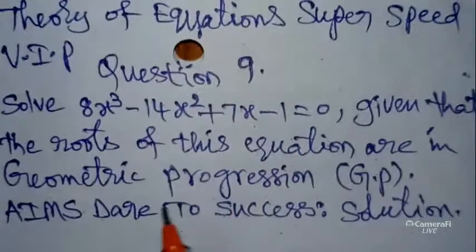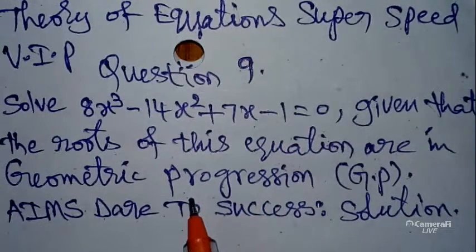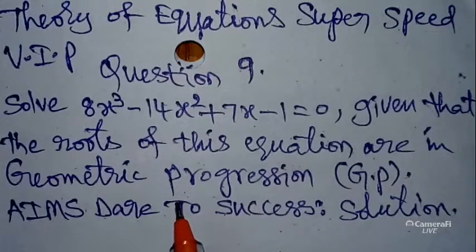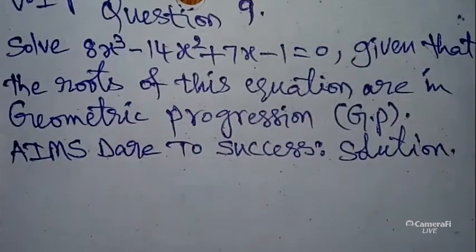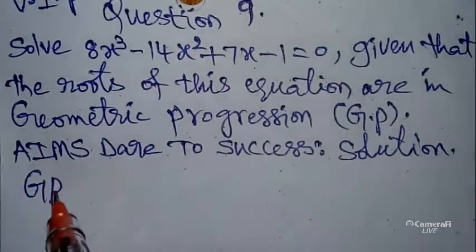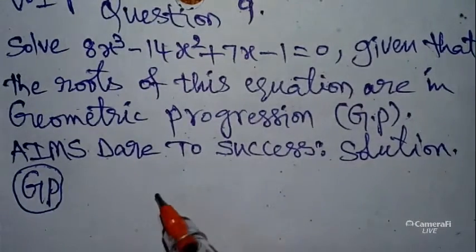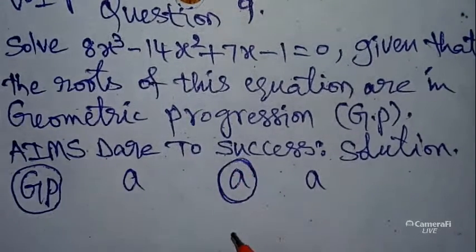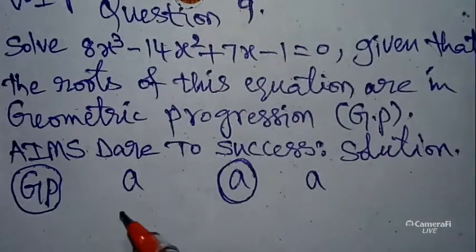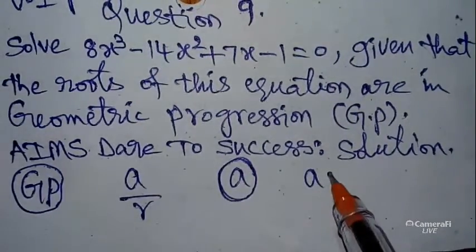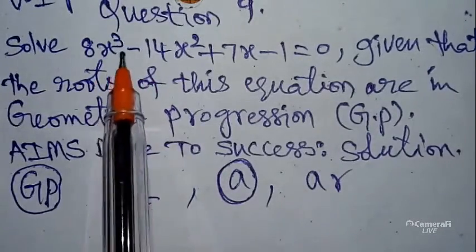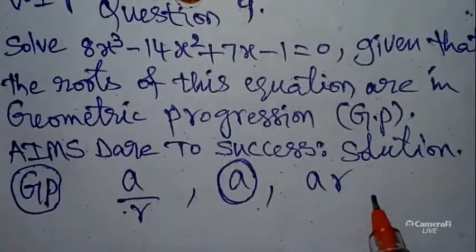If you have any doubt related to this concept or a different concept, please leave a comment in the comment box and I can explain it in the next video. Now, for Geometric Progression: my logic is to take three terms as a/r, a, and ar. The common ratio is R, with one side divided by R and the other multiplied by R. The equation degree is 3, so we have 3 roots: a/r, a, and ar.